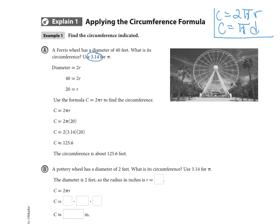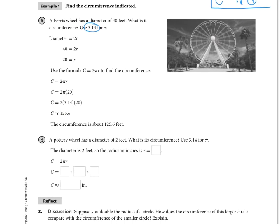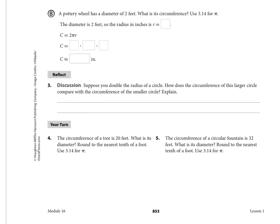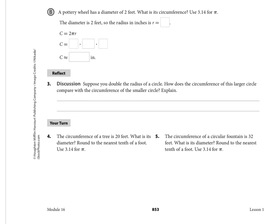So for part B, we're going to fill in the pottery wheel. Here has a diameter of 2 feet, we want to know what is its circumference. So again, if we have the diameter is 2, then the radius is going to be 1 foot. And so we can do 2 times substitute your 3.14 for pi and then times 1, and then that comes out to be 6.28 inches.